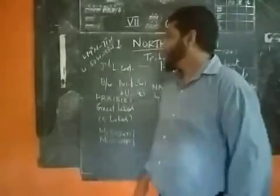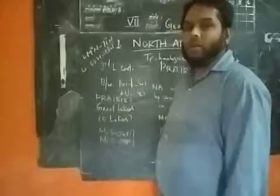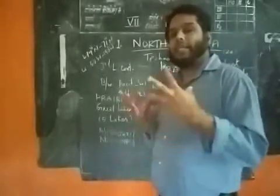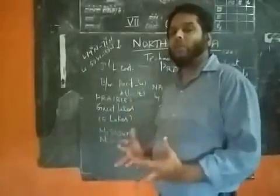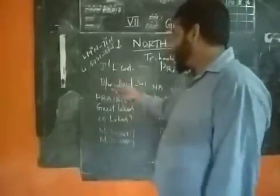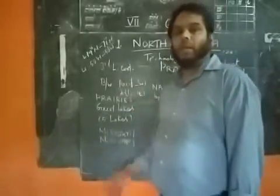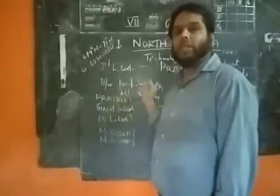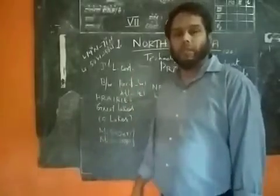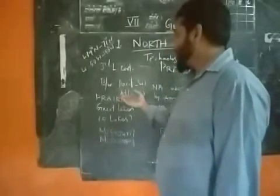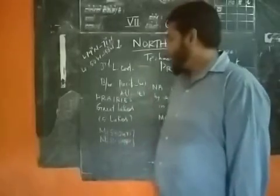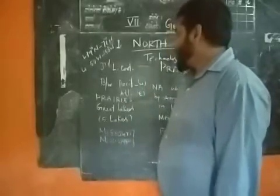Let us find out the exact location of North America. The Pacific Ocean is located on the west part of North America, and the Atlantic Ocean is located on the east side of North America.